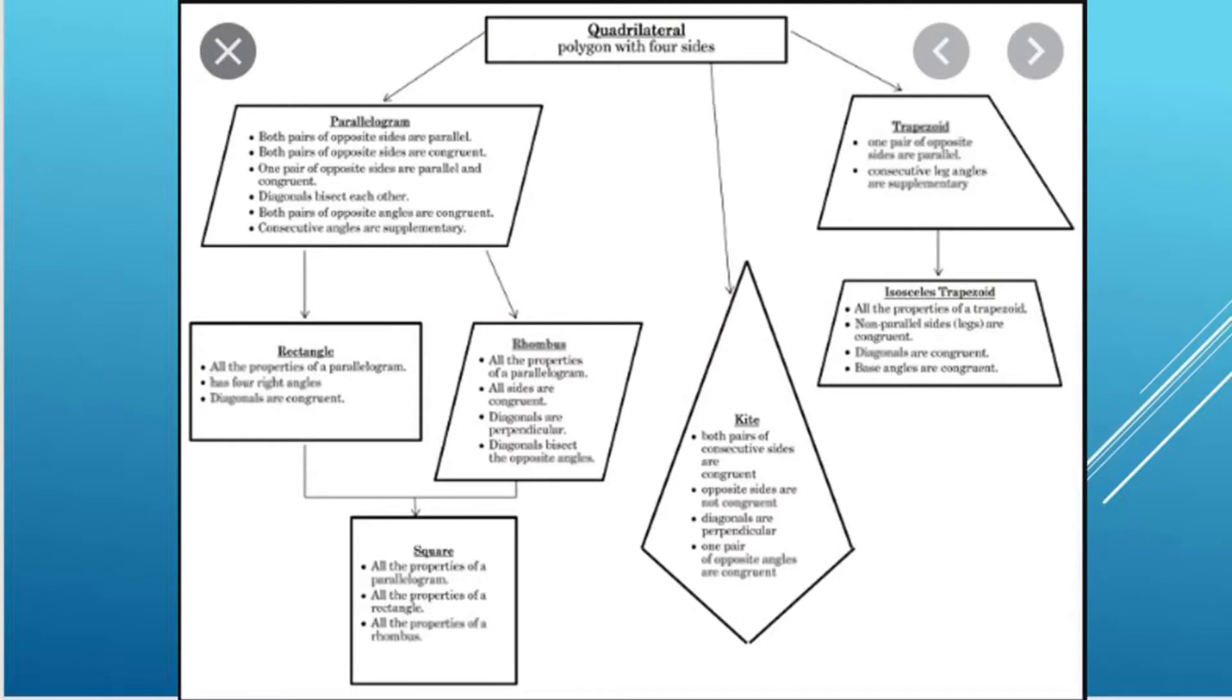For example, a rectangle is a rectangle because it has four right angles, but it is also a parallelogram because it has two sets of parallel sides.